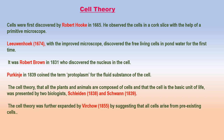An English scientist, Robert Hooke, in 1665 discovered and named the cells. In 1674, Anton Leeuwenhoek, a Dutch microscopist, made an improved microscope and using this microscope he discovered the free-living cells in pond water for the first time.